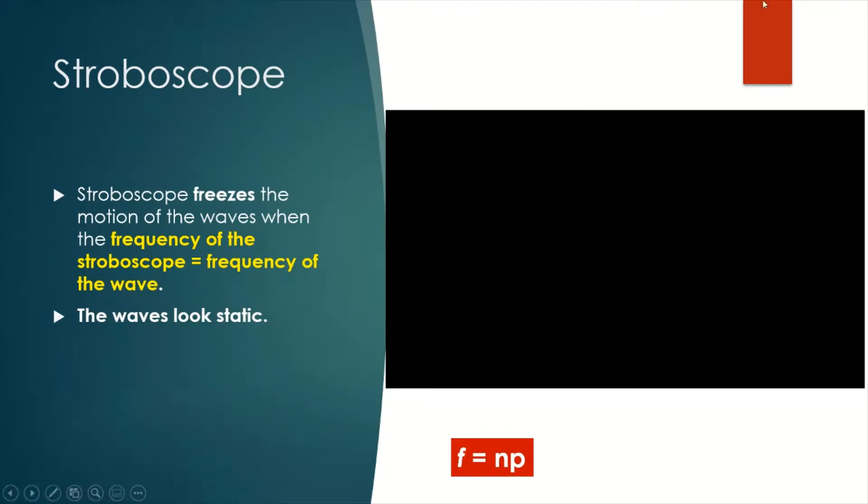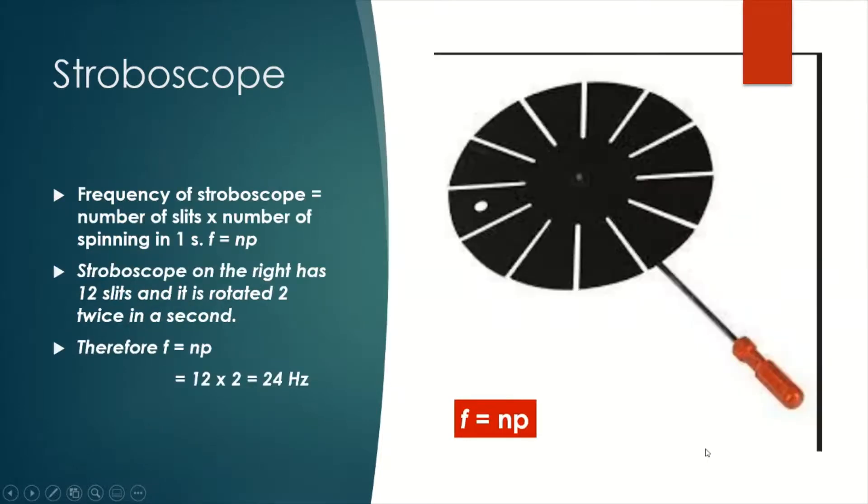The motion of a moving object is frozen when the frequency of the stroboscope equals the frequency of the wave. But how do we determine the frequency of the stroboscope?